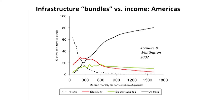This next slide shows infrastructure bundles versus income for a few regions. The black line shows households getting all of these services as income goes up. As income rises, having only one infrastructure service declines rapidly — the dashed line for no infrastructure services falls off dramatically with income, while the solid dark line for households that have the full bundle of services goes up steadily.